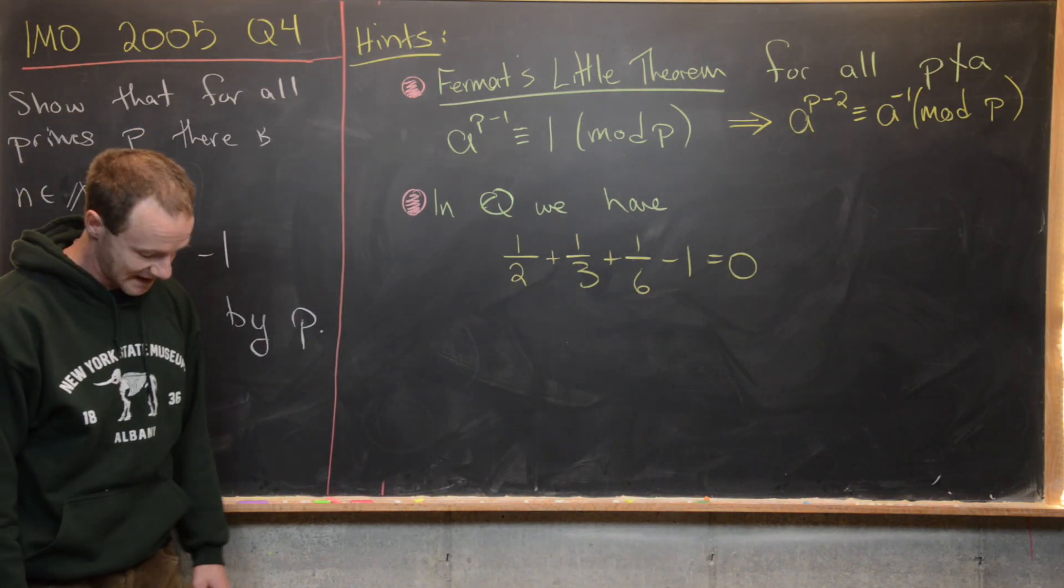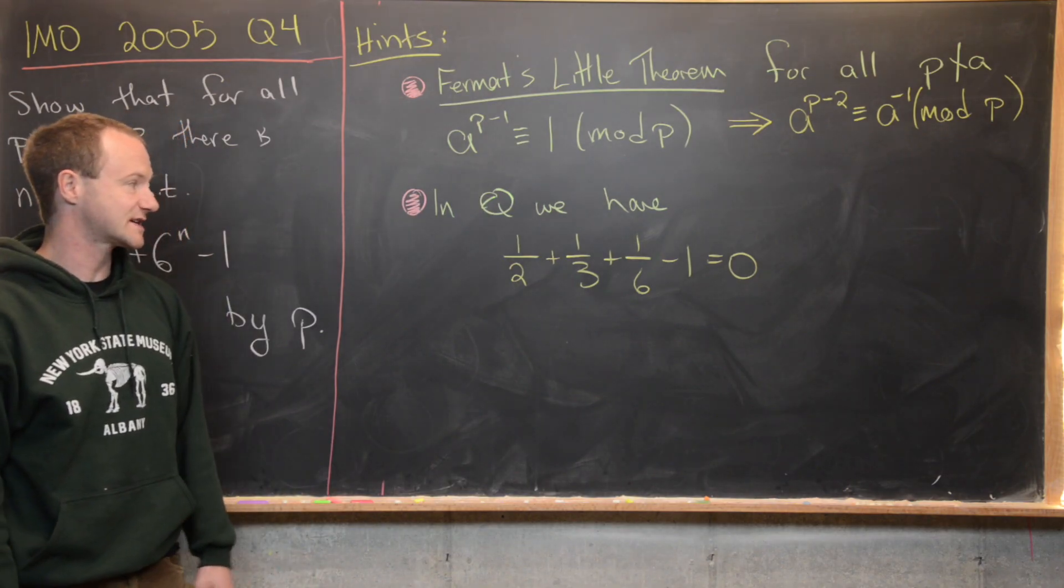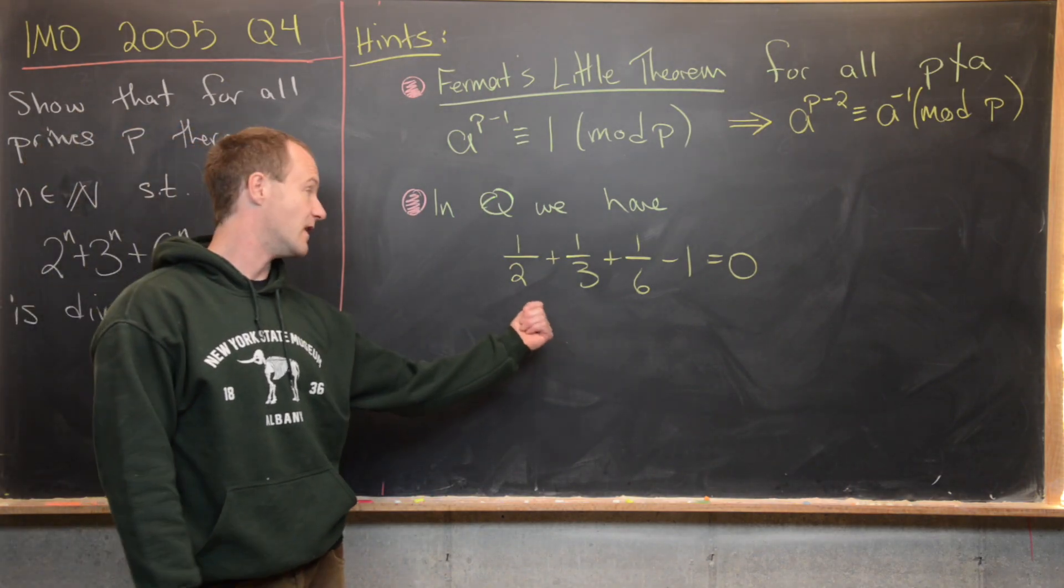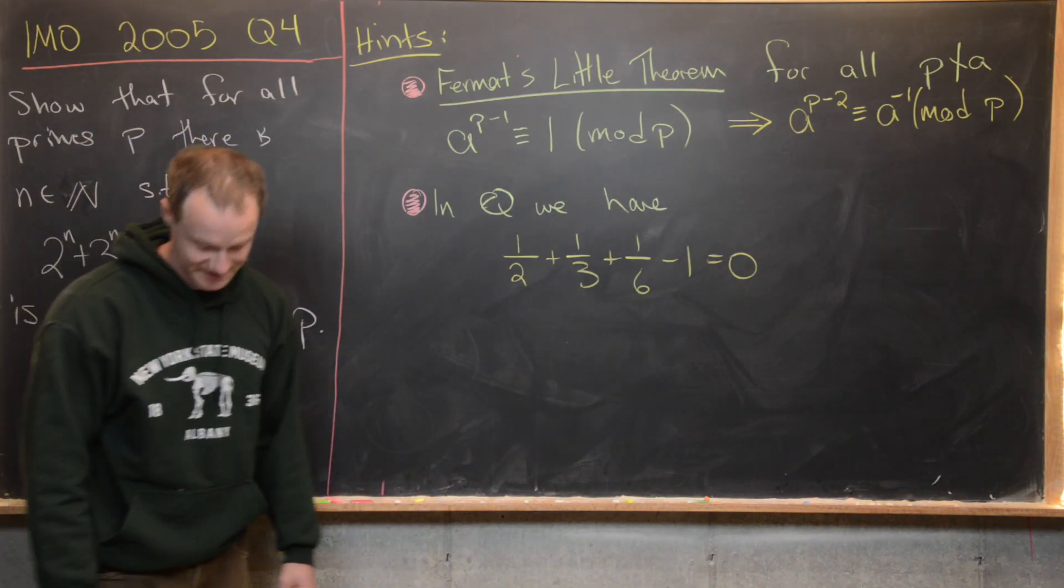My next hint is that in Q we have 1/2 + 1/3 + 1/6 = 1, and thus 1/2 + 1/3 + 1/6 - 1 = 0.